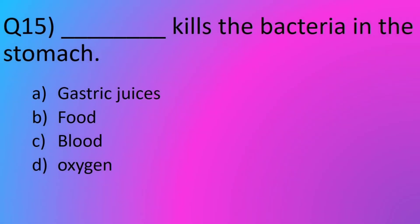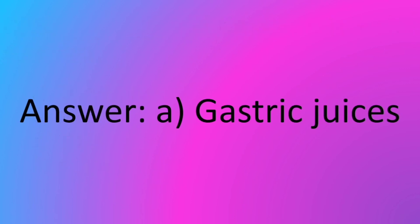Question No. 15: Dash kills the bacteria in the stomach. Option A: Gastric juices. Option B: Food. Option C: Blood. Option D: Oxygen. The answer is Option A: Gastric juices.